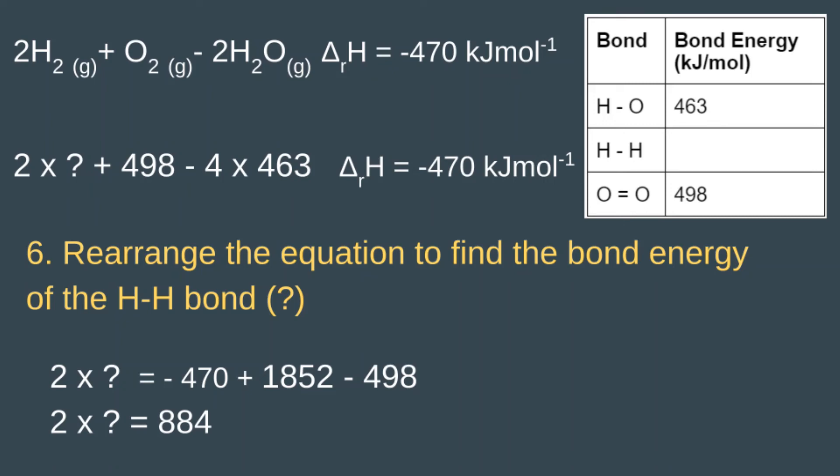The next step is to get rid of the 498 from the left-hand side. So two times question mark plus 498 equals negative 470 plus 1852. To get rid of the 498, we need to minus 498 from the left-hand side. So now we have two times question mark equals...